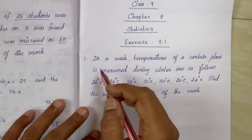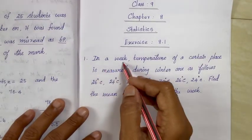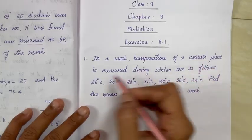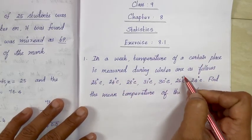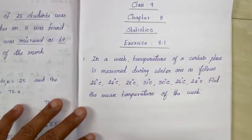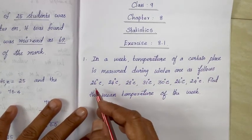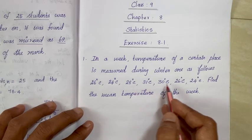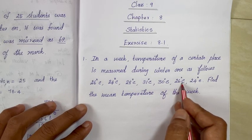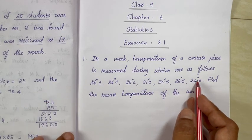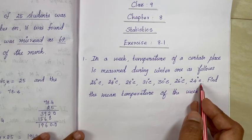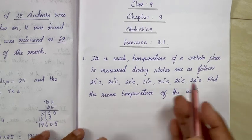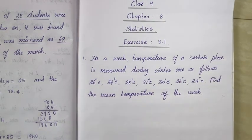In a week, the temperature of certain places measured during winter are as follows: 26°, 24°, 28°, 31°, 30°, 26°, and 24° Celsius. Find the mean temperature of the week.